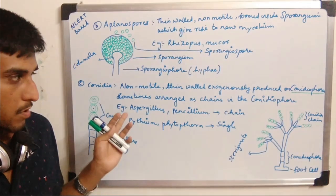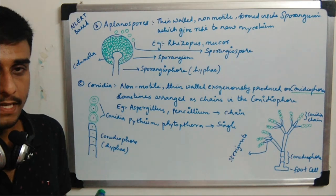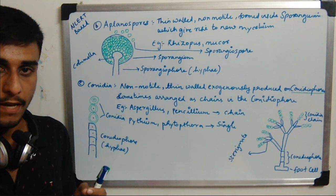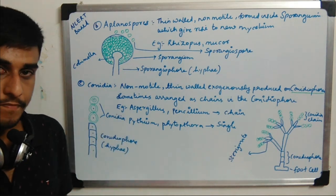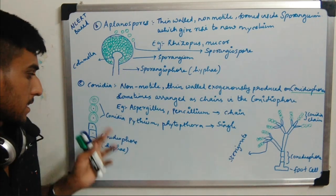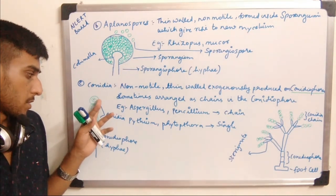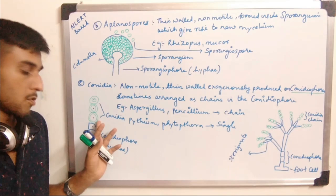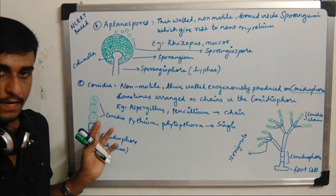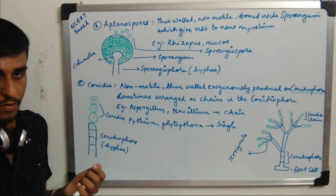Conidia are also thin-walled, non-motile, and exogenously produced — meaning they are produced as part of the hyphae. A normal hyphae gets converted into conidia. Conidia can be seen in chain form or as a single conidia — the modification of hyphae into a spore structure known as conidia.